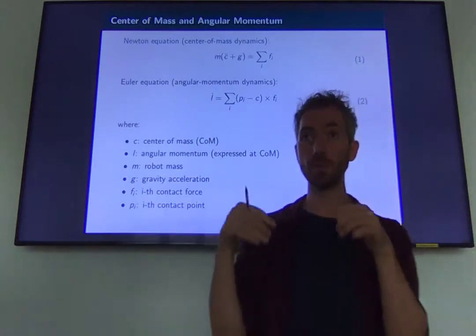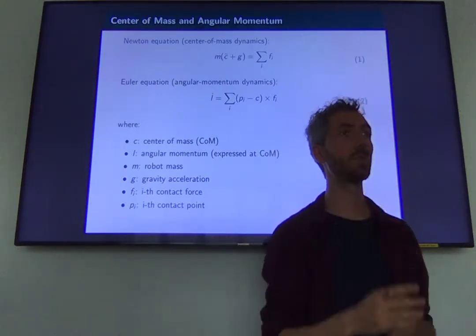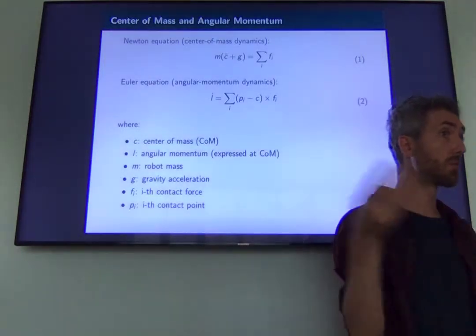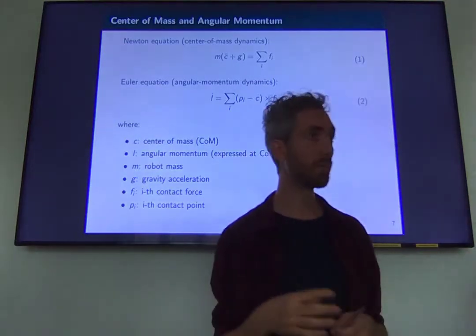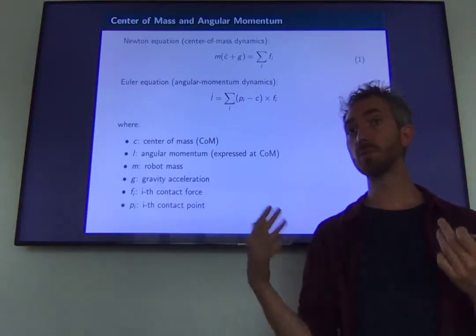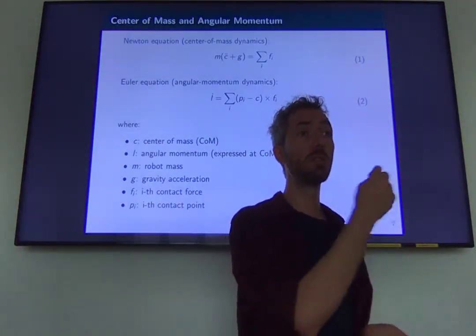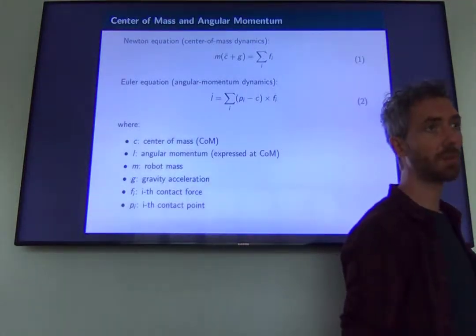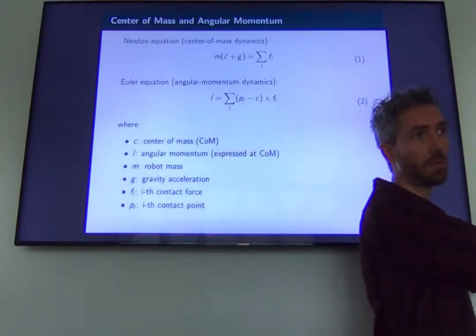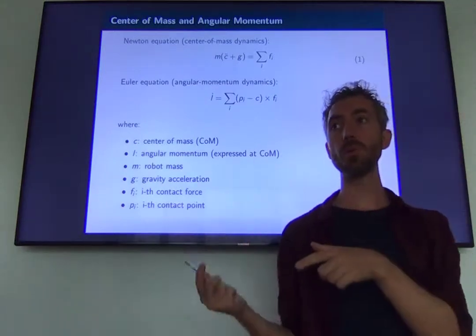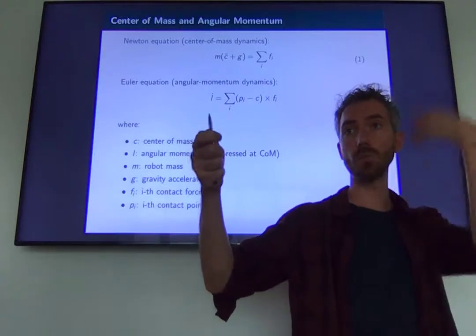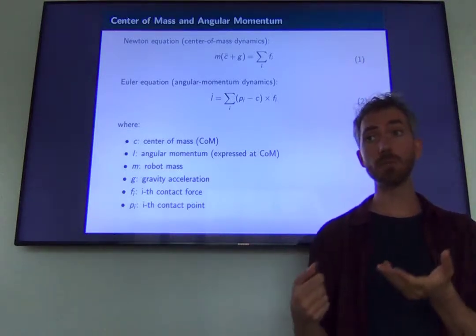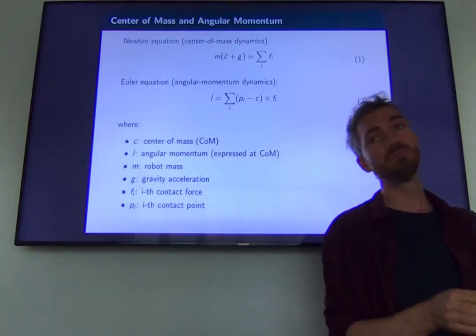The problem of trajectory optimization for locomotion and manipulation are very hard problems because they involve rigid contacts. When we model rigid contacts, we typically have two options. Either we model them as infinitely rigid — in this case they act as constraints, because once I'm in contact with something I cannot move in the direction of contact — which makes the dynamical system hybrid. Every time I make contact, my dynamics changes.